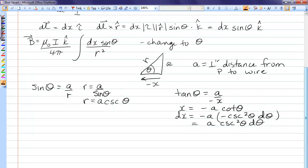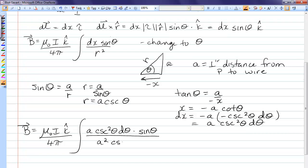Okay so we'll put these into the integral. So I have B = μ₀I k-hat over 4π. For dx I put a cosecant squared theta dθ. And then I have a sine theta. And I have r squared which is a² cosecant squared theta. The cosecant squared cancel. The a on top cancels one on the bottom.